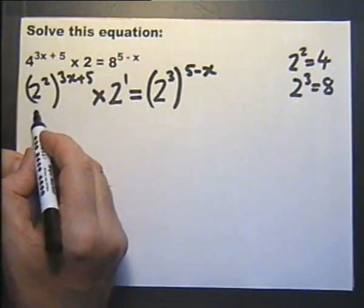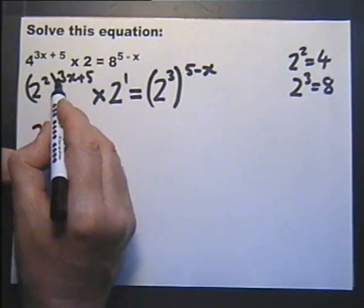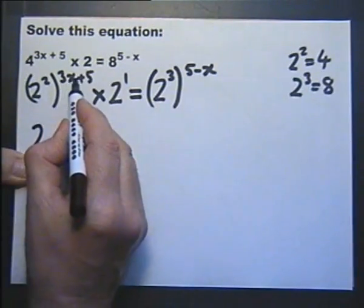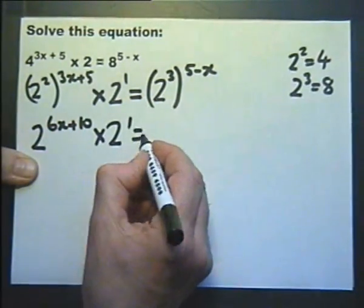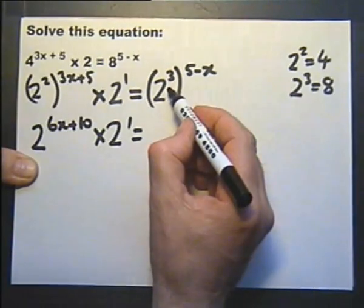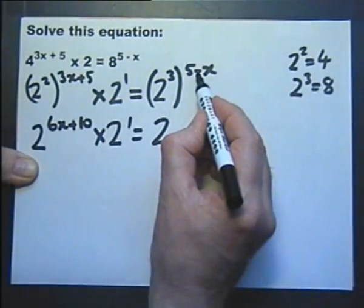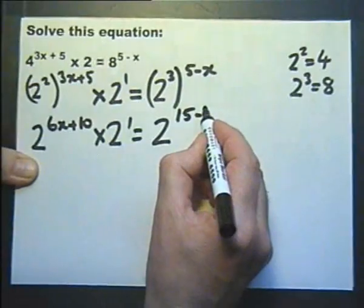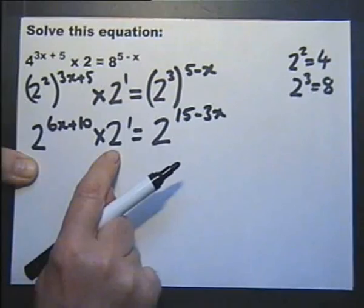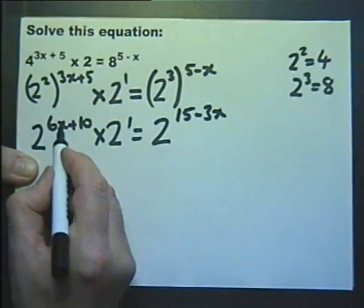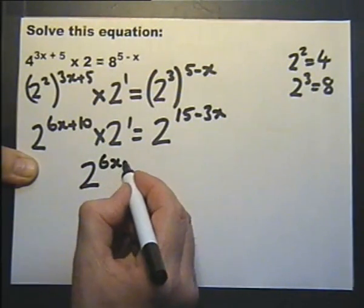Using the third rule of indices, we can appreciate that this can be written as 2 raised to the power of these two indices multiplied together. So let's multiply 2 by (3x plus 5), which will give us 6x plus 10. The same applies here — let's rewrite this as 2 raised to the power of 3 multiplied by (5 minus x), which gives us 15 minus 3x. So 2 raised to the power of something multiplied by 2 raised to the power of something is 2 raised to the power of those indices added together. Adding 6x plus 10 to 1 gives 6x plus 11.